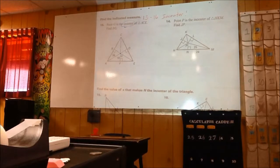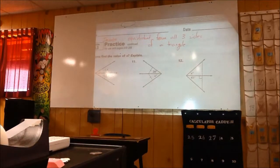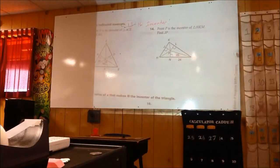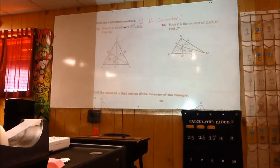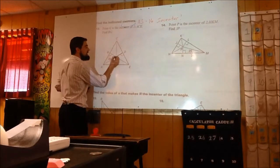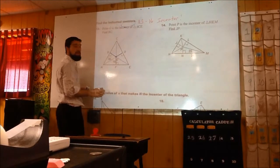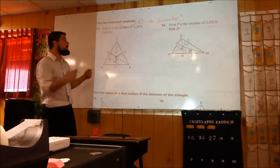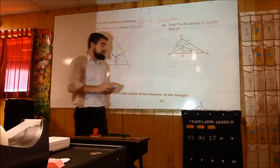We have that written at the top — in-center is equidistant from all three sides of the triangle. Remember, you have to know that you're talking about that perpendicular distance. In all these diagrams, 13 through 16, they show you that perpendicular distance. So you've got the distance from G to D, G to B, and G to F — that's the perpendicular distance from the in-center to all the sides. We know the in-center is equidistant from the sides, so all of those are congruent.